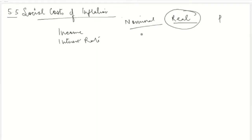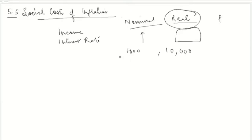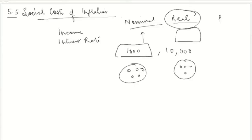Even when your income is increasing, it is possible that your nominal income is increasing but your real income is not. For example, although you had 1,000 rupees and now you are getting 10,000 rupees, your nominal income has increased massively, but you may still be able to buy only the same set of commodities because every commodity has become more expensive.